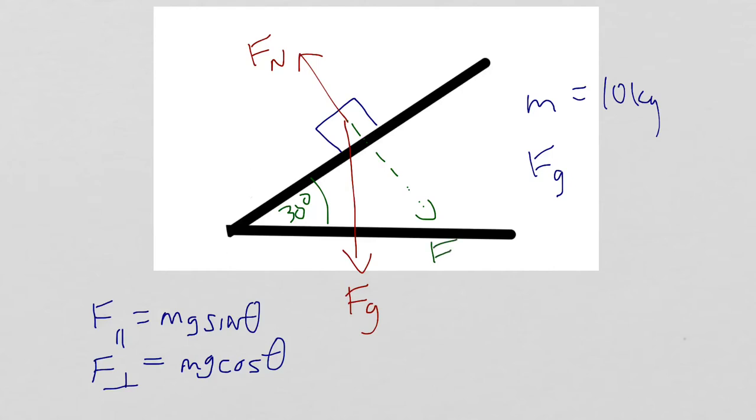F perpendicular, is M, which is 10 kilograms, G, 9.81 meters per second squared, and the cosine of 30 degrees.